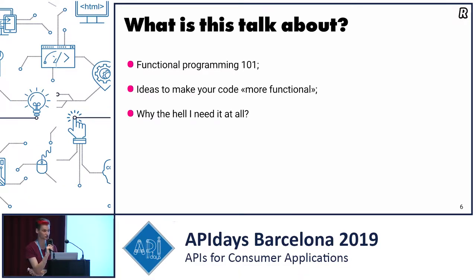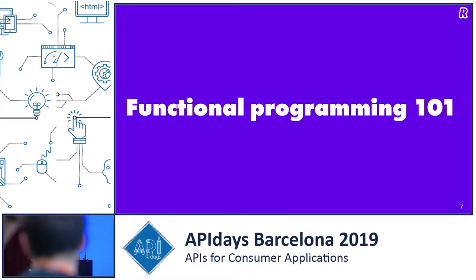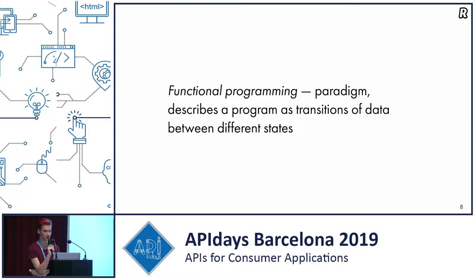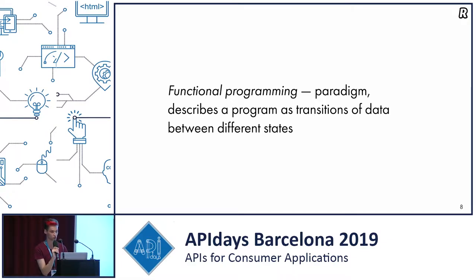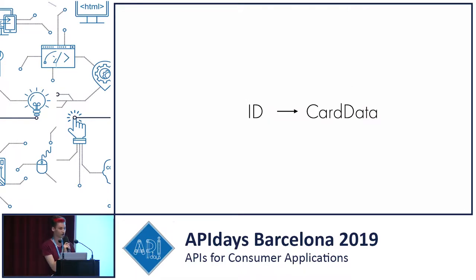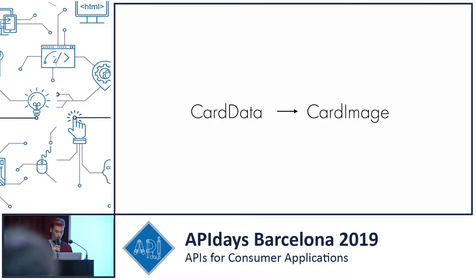Let's start with a short functional programming explanation. It's really hard to give a good description in short. I like to describe functional programming as a number of transitions — you transition data between different states, and such transitions are the core of your program. For example, you want to receive card data by card identifier. You have a function that transfers your card identifier to card data. Then you want to draw a picture of a card by this card data — so it's another function. You send card data and receive a card image.